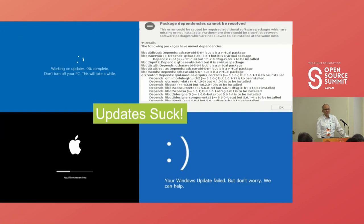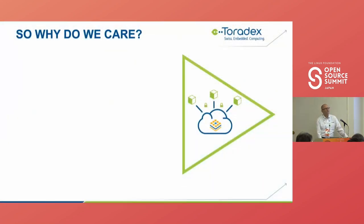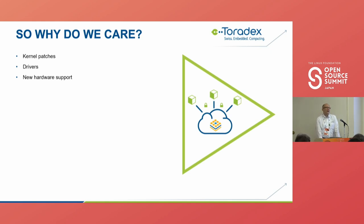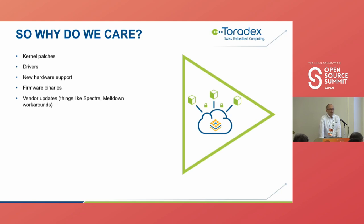There's been a lot of talk and many different software packages implementing updates over the last five or six years. It's a hot topic in the industrial and IoT spaces. Why do we care about updates? There are patches — not just to the kernel but to all software on your system. There are lots of critical vulnerabilities found all the time. We need to add drivers, sometimes new hardware support. Users might add a USB device needing a driver not tested at production time. Custom firmware binaries are constantly getting updated — for your Wi-Fi chip, for example. Vendor updates like Spectre and Meltdown resulted in lots of changes at the firmware level and in the kernel.